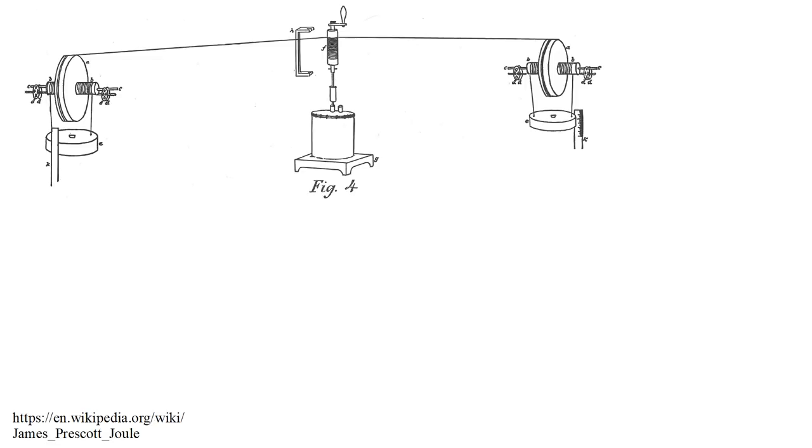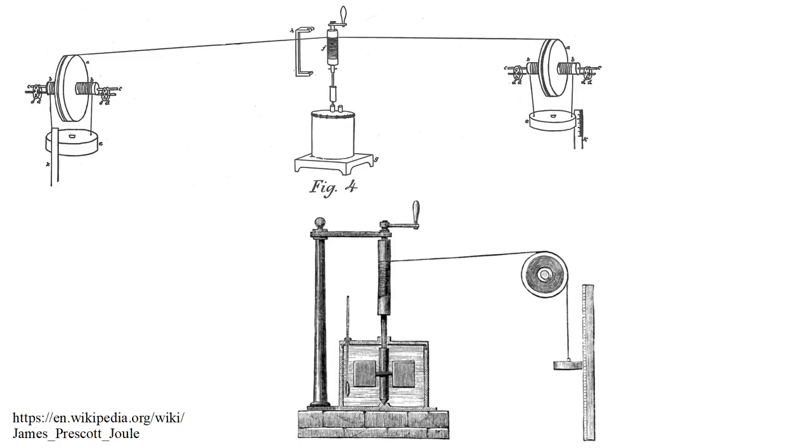The working principle of Joule's apparatus is shown in this illustration from his publication, and in this illustration from an 1869 magazine article. The heart of the apparatus is a water-filled chamber. Through its top is a shaft with attached paddles. When the shaft turns, the paddles push against the water.